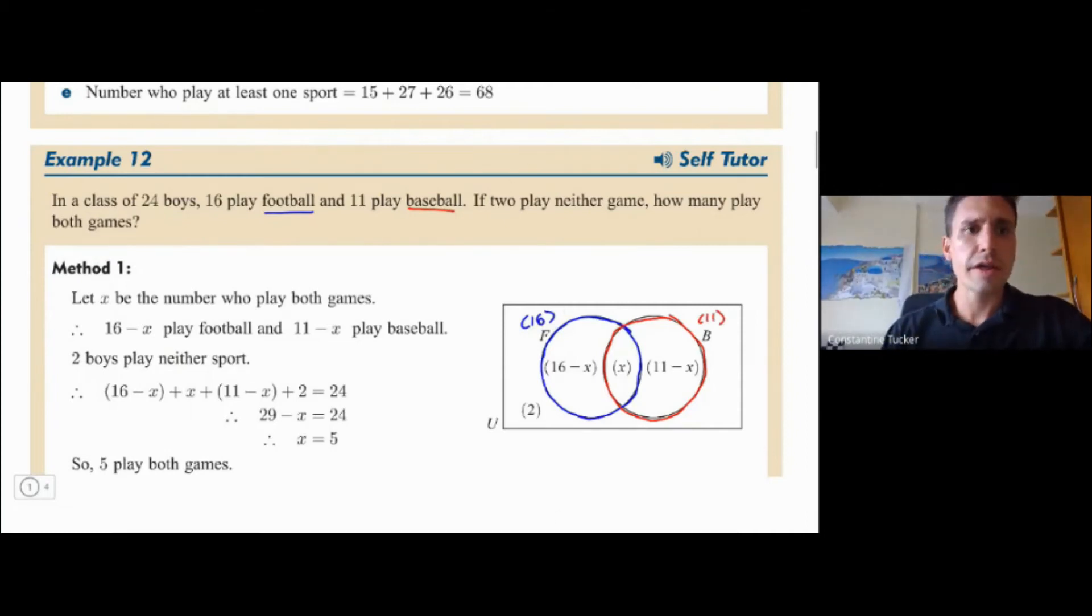All right. So now they say two play neither. So this is particularly useful. It means that the two, this two here, will go outside the Venn diagram right here. So we've got two outside.